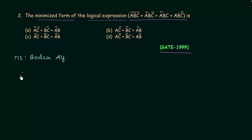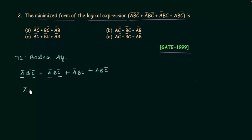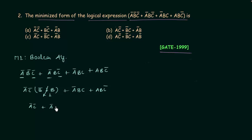The given logical expression is: A'B'C' or A'BC' or A'BC or ABC'. From the first two terms, A' and C' are common, so taking them out gives A'C'(B' or B) plus the remaining terms A'BC and ABC'. Since B' or B equals 1, we have A'C' or A'BC or ABC'.